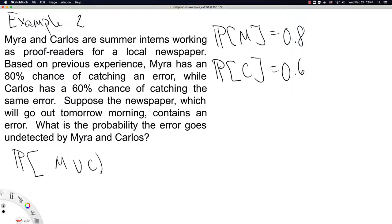So that means P(M or C)' is neither of them caught this error. Now that looks a little bit intimidating at first, but using some properties of probability, we could turn this into 1 minus P(M or C) catches the error. So now we can deal with this.